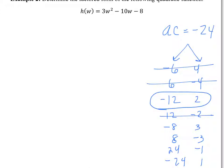Out of all these lists of factors, it's always going to work with one — you're not going to get more than one choice. Only one works. Once you get the one that gives you the B value, you stop there. So negative 12 plus 2 gives me whatever B is, which is negative 10.